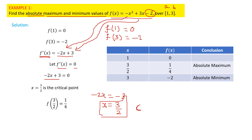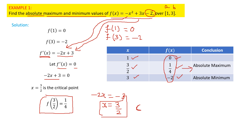Substituting the critical point 3/2 into the function gives 1/4. So: f(1) = 0, f(3/2) = 1/4, f(3) = -2. Among these three values, 1/4 is the maximum value, so 1/4 is the absolute maximum. The smallest value is -2, so the absolute minimum is -2.